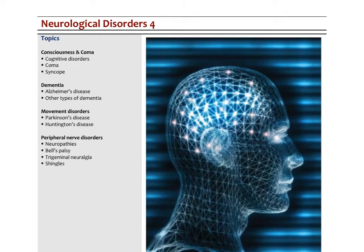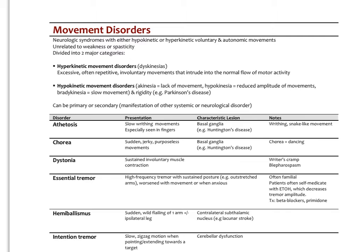In this video we're going to look at movement disorders, focusing on Parkinson's and Huntington's, but we're going to do a little general introduction about what the different types of movement disorders are. Movement disorders are neurologic syndromes with either hypokinetic or hyperkinetic voluntary or autonomic movements. They're unrelated to weakness or spasticity, and they're divided into two major categories.